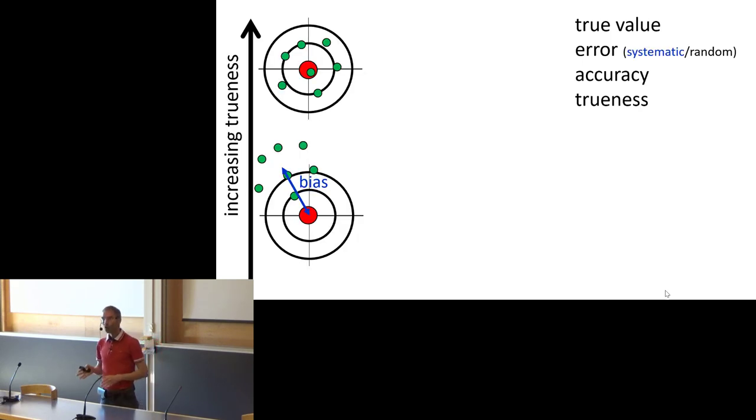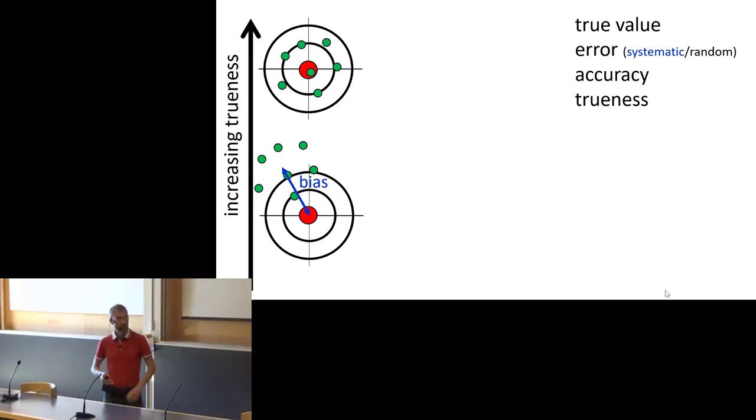I show here two examples of the same number of measurements, with the same true value, but with a different degree of trueness. At the bottom, there is a large spread in your data points, and the average value is quite far away from the true value.